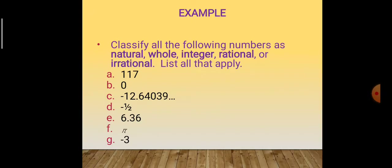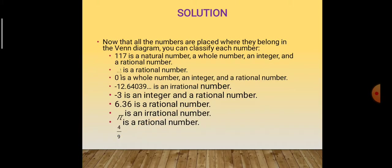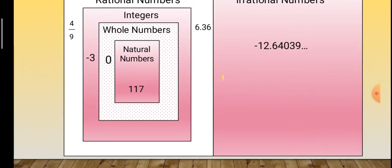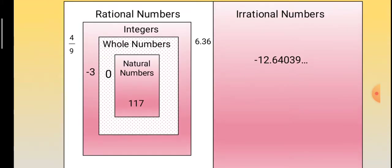You have understood the concept of rational and irrational numbers, and we discussed it with examples. We can also show this as a figure. Natural numbers: 117. Whole numbers: 0 and 117. Integers: -3, 0, 117. Rational numbers: 4/9, 6.36, and others. Irrational numbers: -12.64039...